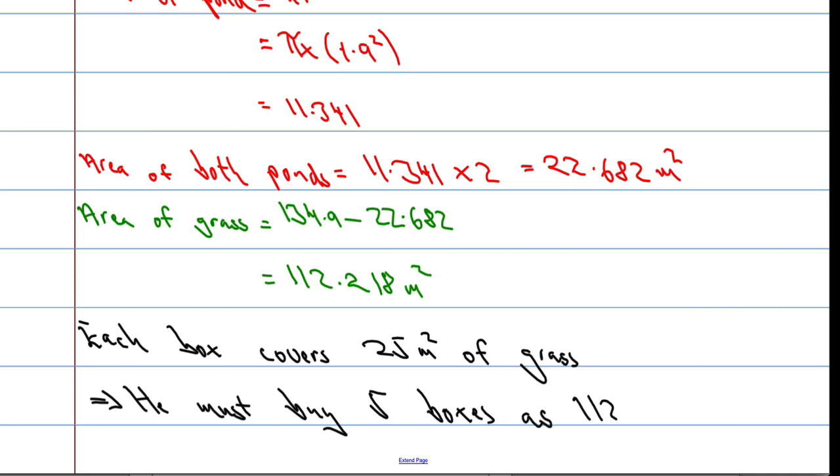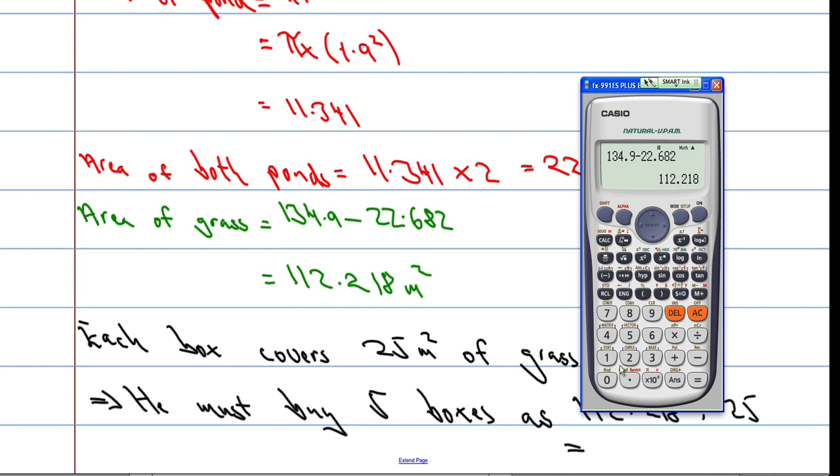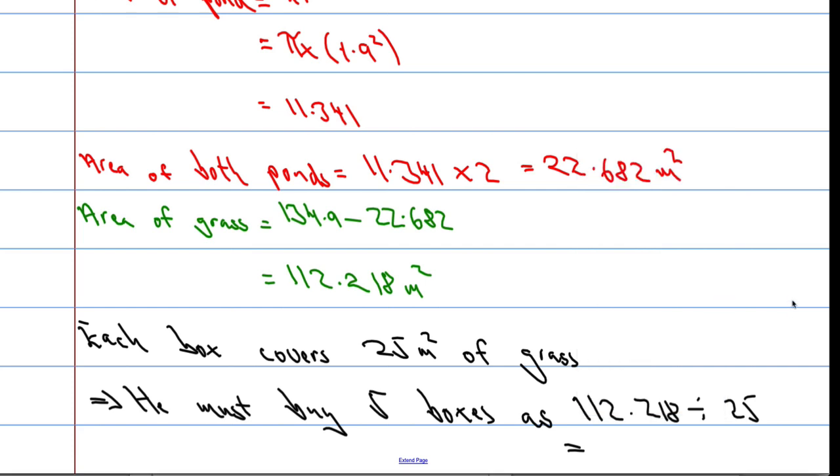And 112, let's just show where this came from. 112.218 divided by 25 equals, it's going to be 4 point something, let's divide that by 25, 4.489 to 3 decimal places, 4.489. With more than 4 boxes, or less than 5, we can't buy half a box, so 4.489.